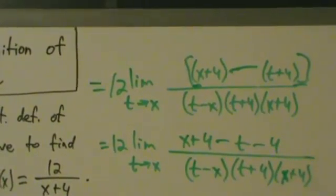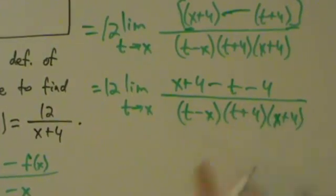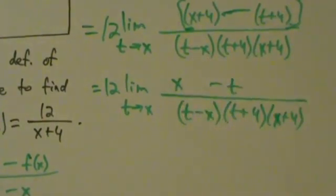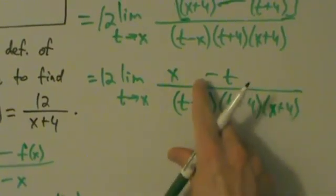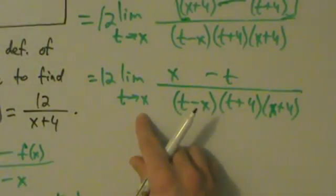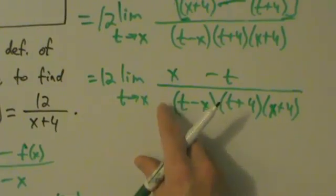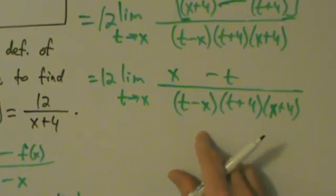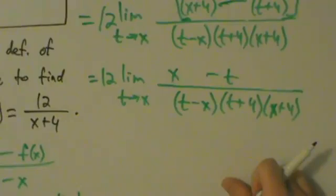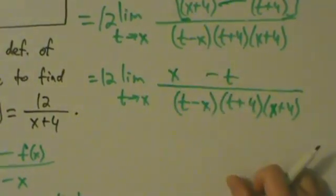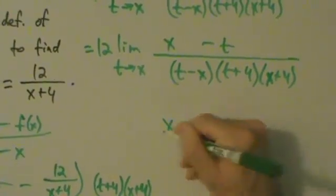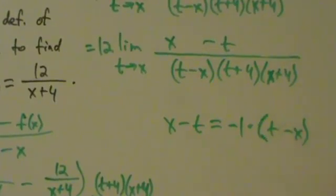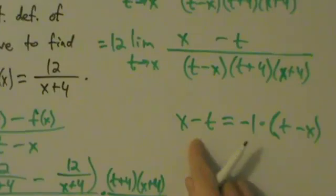On the top we have plus 4 minus 4, so those cancel. Now what we have is x minus t on top. We're taking a limit as t approaches x, so if we try direct substitution we'd get x minus x on top and x minus x on the bottom — that's bad. So we want to cancel these, but notice we have x minus t on top and t minus x on the bottom.